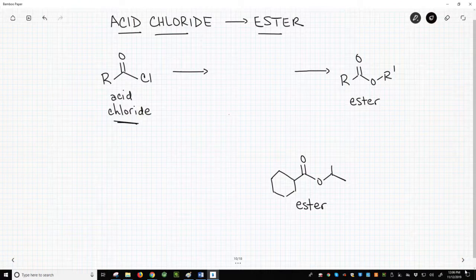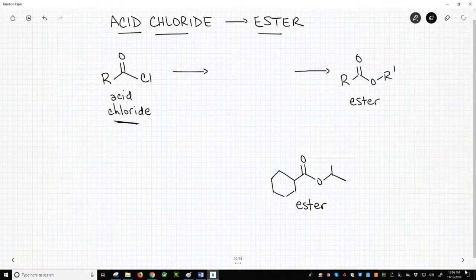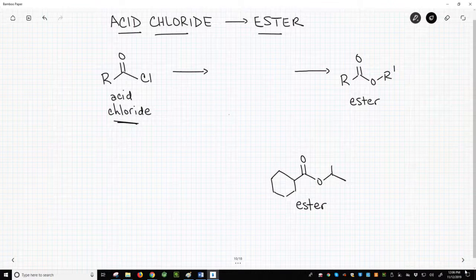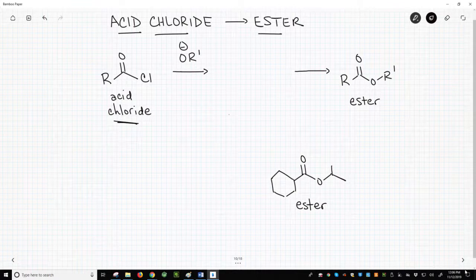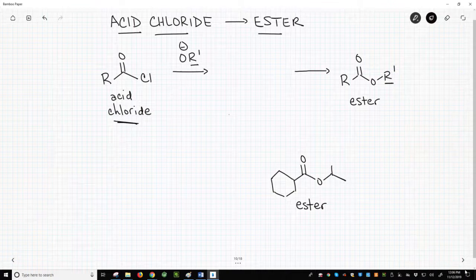Remember that acid chlorides are our strongly electrophilic reagent for accessing almost all the other acid derivatives, so we'll take our acid chloride and react it with an alkoxide. The R' group of the alkoxide will match the R' group of our eventual ester product.